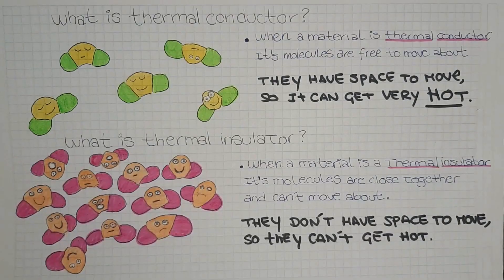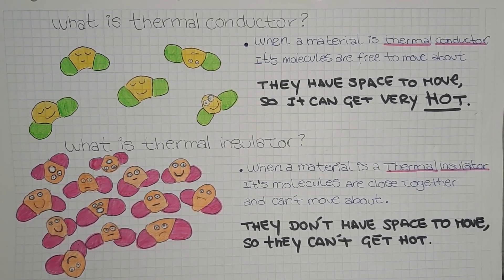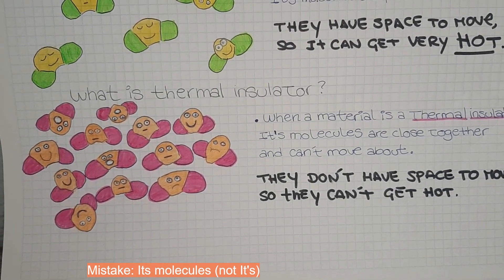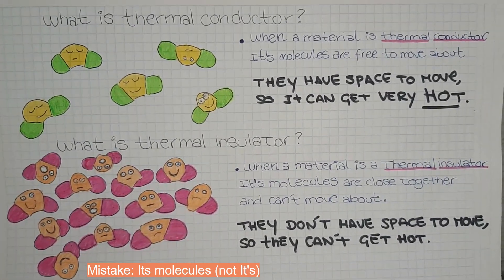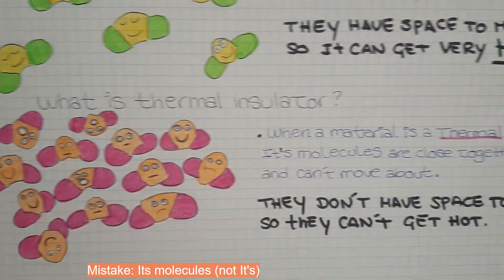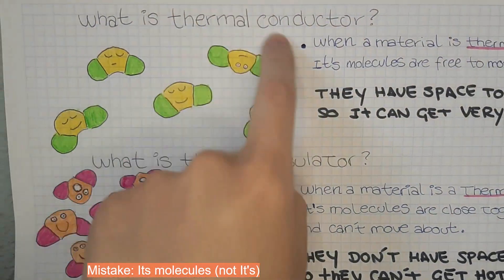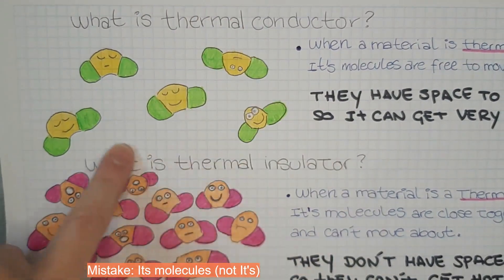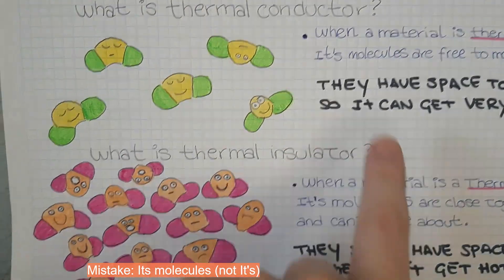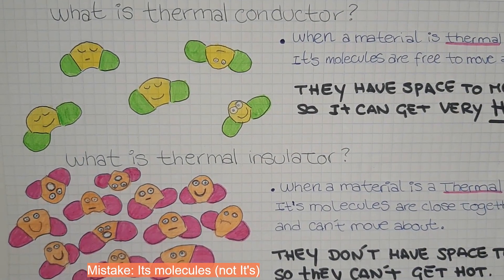Molecules in matter have some characteristics. We can find material that is a thermal conductor or material that is a thermal insulator. When a material is a thermal conductor, its molecules are free to move about. They have a lot of space to move, so they are happy, they move a lot. So, it can get very hot.